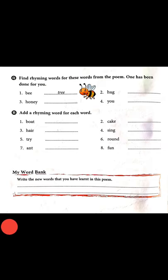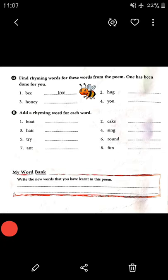Your own rhyming words — words that end with the same sound. Next, come down to 'My Word Bank'. Write the new words you have learned from this poem. The new words from this poem are 'woodland' and 'creatures', so write those two words down.